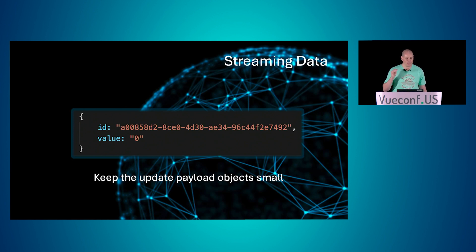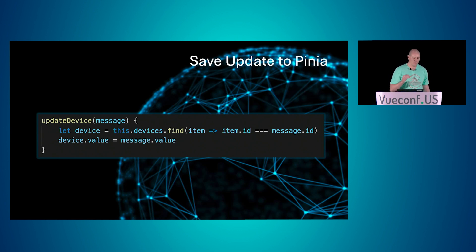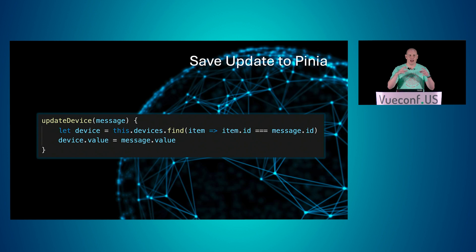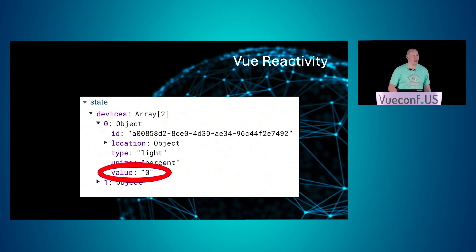In this case, we've got a device ID and we've got a brand new value for that device ID. So we'll create another action in Pinia to update that device. We pass in this brand new message, we go to our state, we find the existing object that lives in state, and then we update it. You can see now in our state our value has changed.